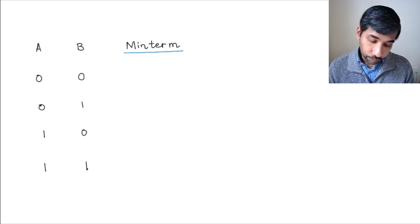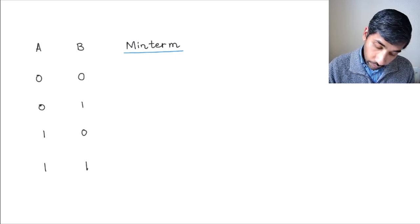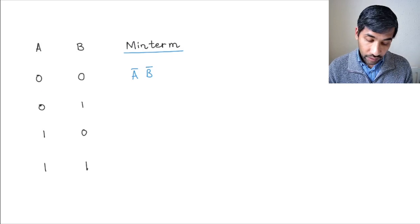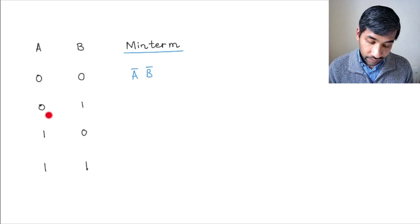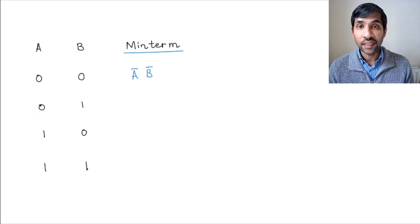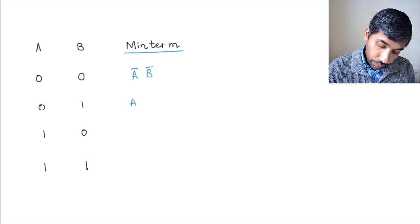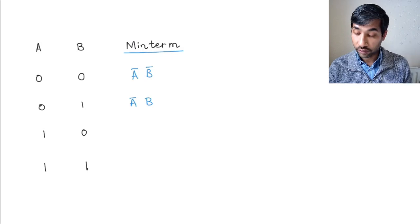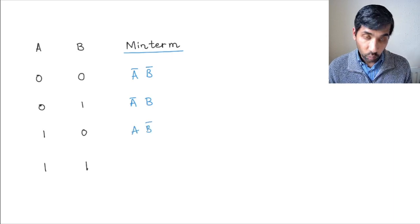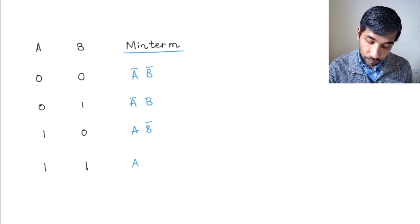Let me show you what I mean. The minterm corresponding to the combination a equal to 0 and b equal to 0 is going to be a bar times b bar. That's because a is 0, so you put the complement of a, and if b is 0, you put the complement of b. Similarly, the minterm corresponding to a equal to 0 and b equal to 1 is a bar times b — since a is 0 we put a bar, and since b is 1 we keep b. For a equal to 1 and b equal to 0, the minterm is a b bar. And for a equal to 1 and b equal to 1, the minterm is a b.